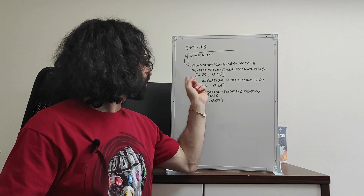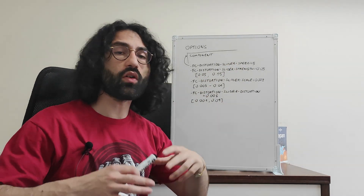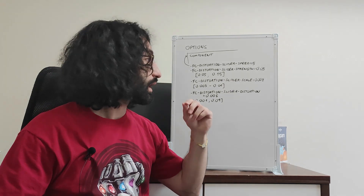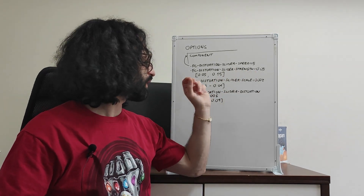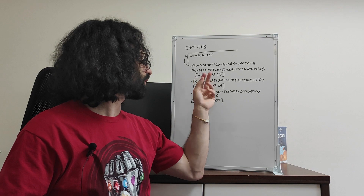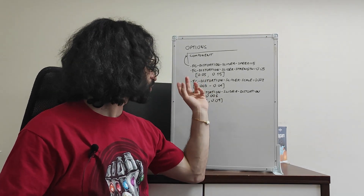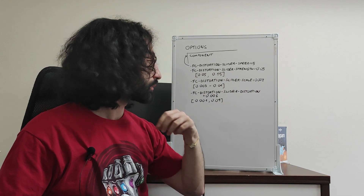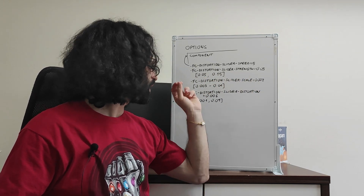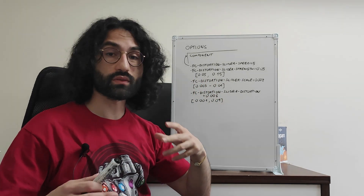Then we have the fc-distortion-slider-strength, which is the overall strength of the distortion effect applied to the slider. The default value is 0.05 and suggested values are between 0.05 and 0.15. Then we have the fc-distortion-slider-scale option. Its default value is 0.003 and suggested values are between 0.003 and 0.01.